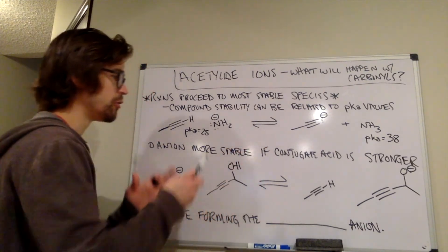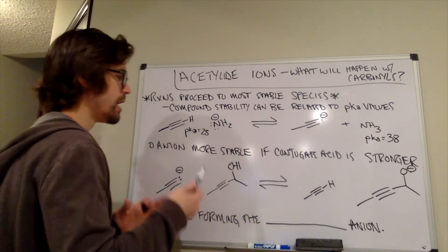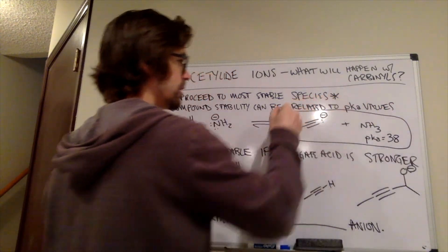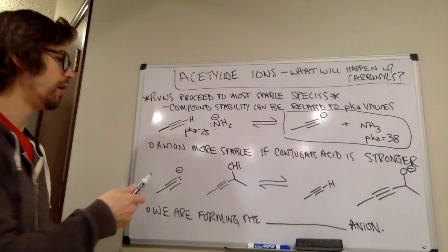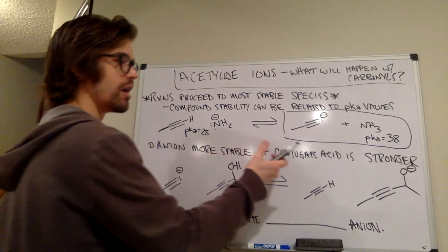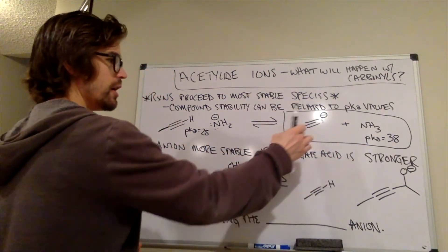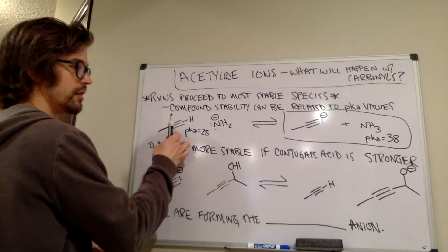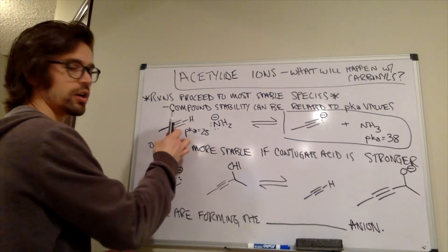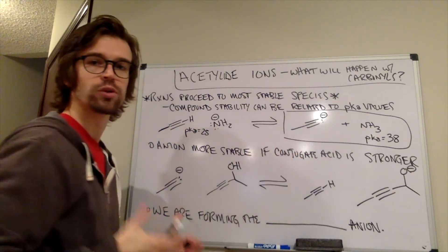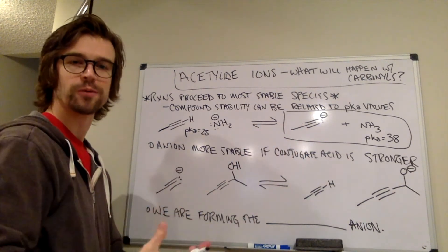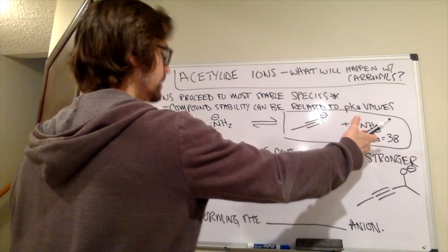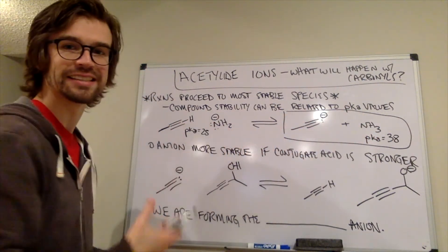So which side is favored of this reaction? And the favored side would be going away from the stronger acid. This is the stronger acid, so that means this is the more favored side. And essentially the anion is more stable if the conjugate acid is stronger. So this anion's conjugate acid is that. This conjugate acid is stronger, that means that this anion is more stable. And we're going to proceed to the most stable anion. This is a weaker acid, meaning that this anion is less stable.